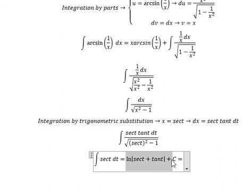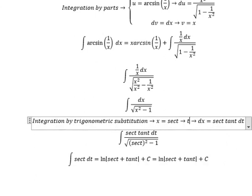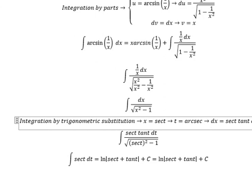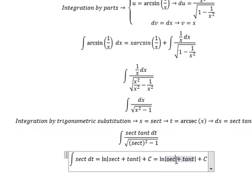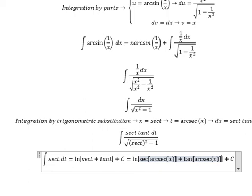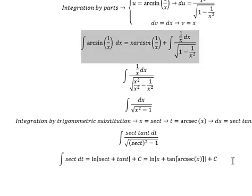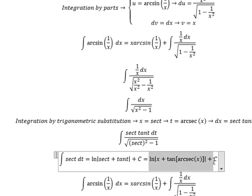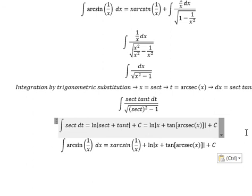Now we substitute back using the relationship from x equals secant t. We put this back into our expression for secant and tan, combine everything together, and this gives us the final answer.